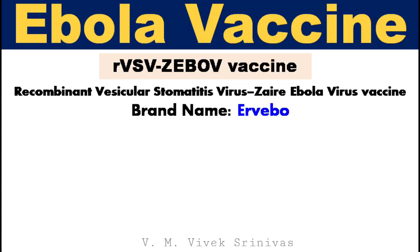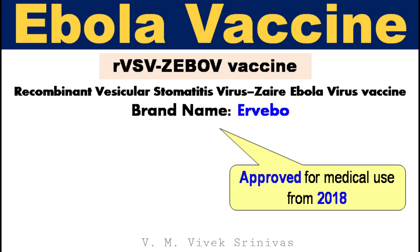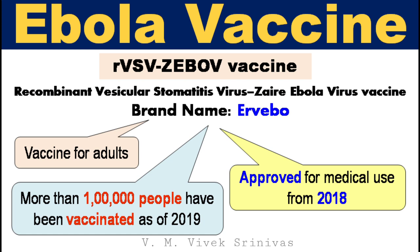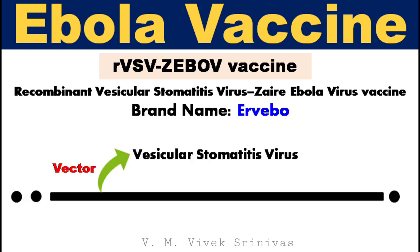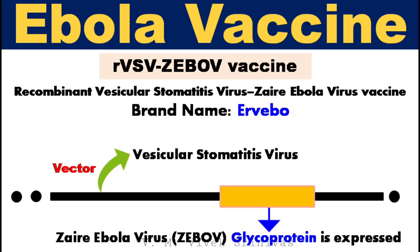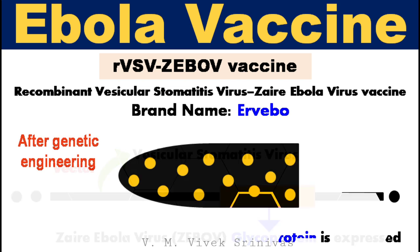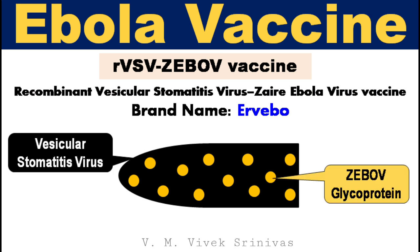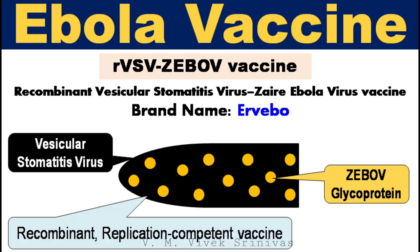Prevention and control: for Ebola virus prevention, a recombinant vesicular stomatitis virus engineered with the Zaire Ebola virus glycoprotein vaccine has been launched recently. The vaccine was approved for medical use in Africa from 2018. As of 2019, more than one million people have been vaccinated against Ebola. This vaccine is used only in adults. It is prepared by genetically engineering the vesicular stomatitis viral genome to express glycoprotein obtained from the Zaire Ebola virus, which provokes a neutralizing immune response to the Ebola virus. This vaccine is a recombinant, replication-competent vaccine.